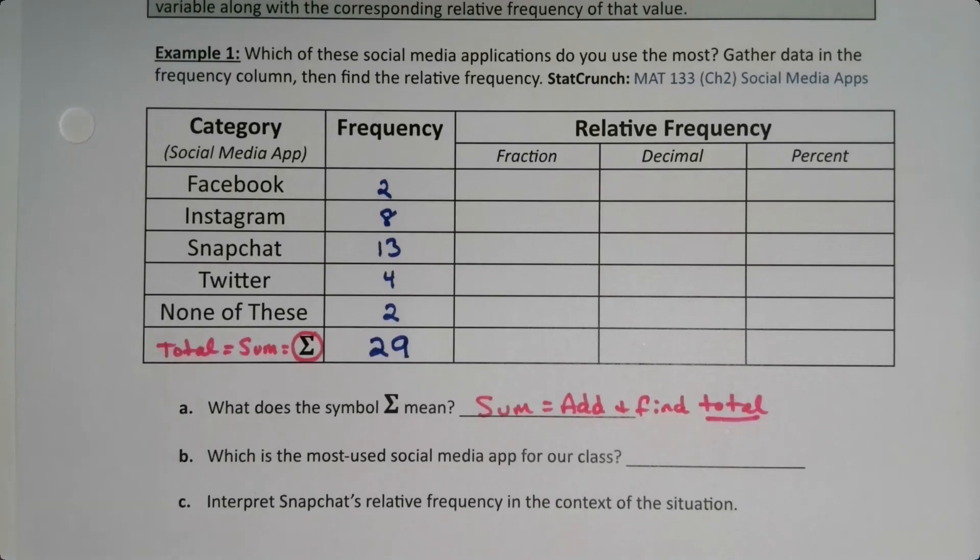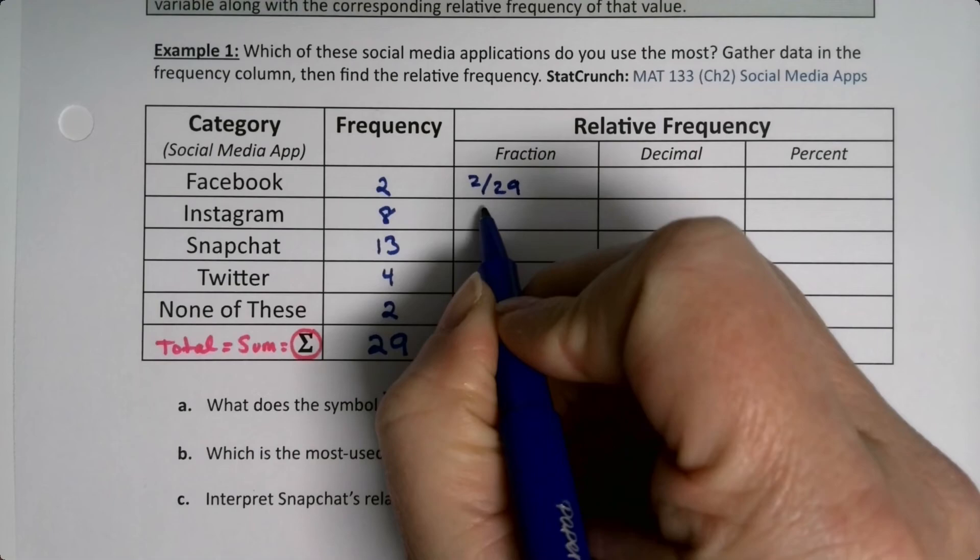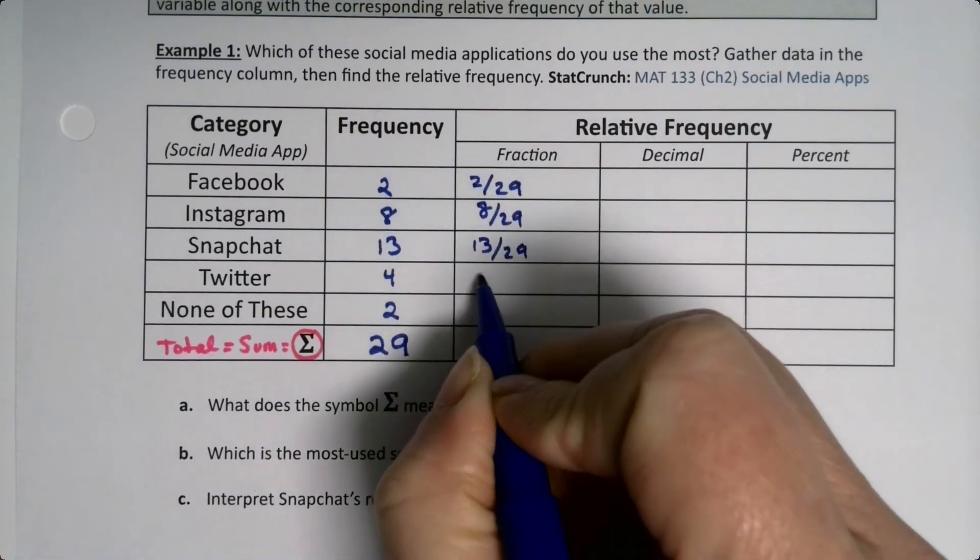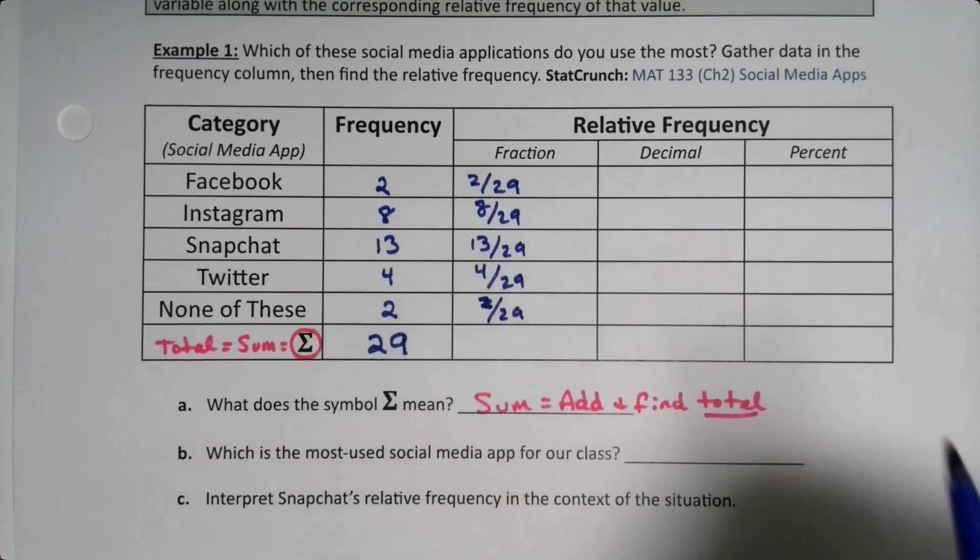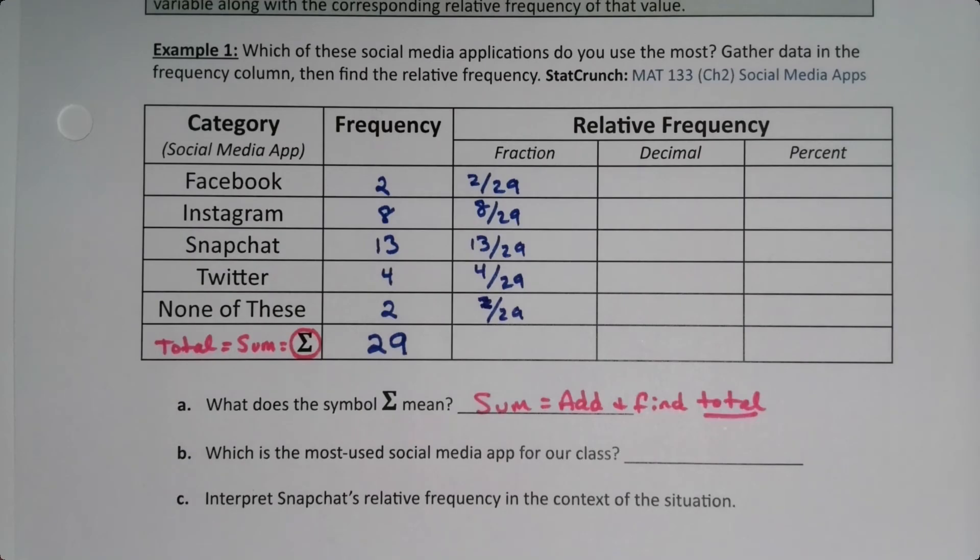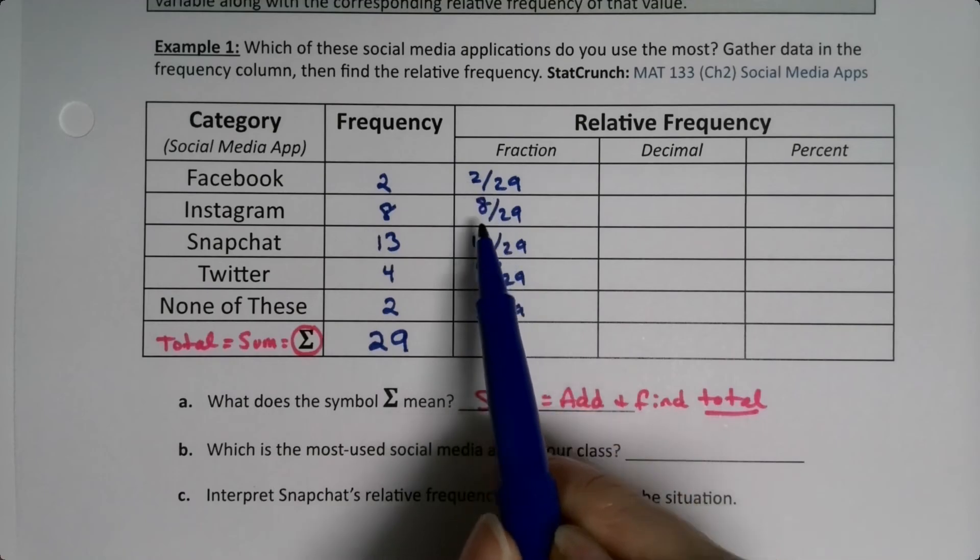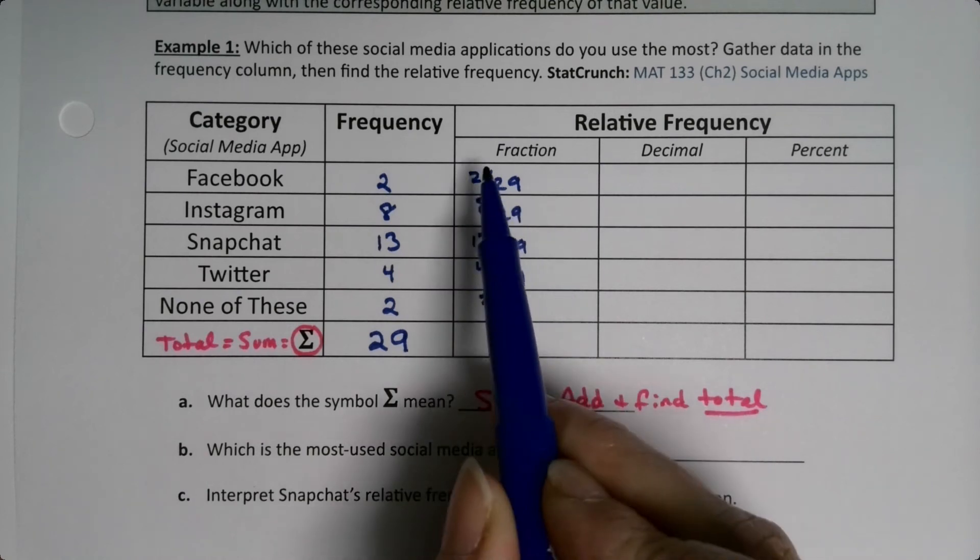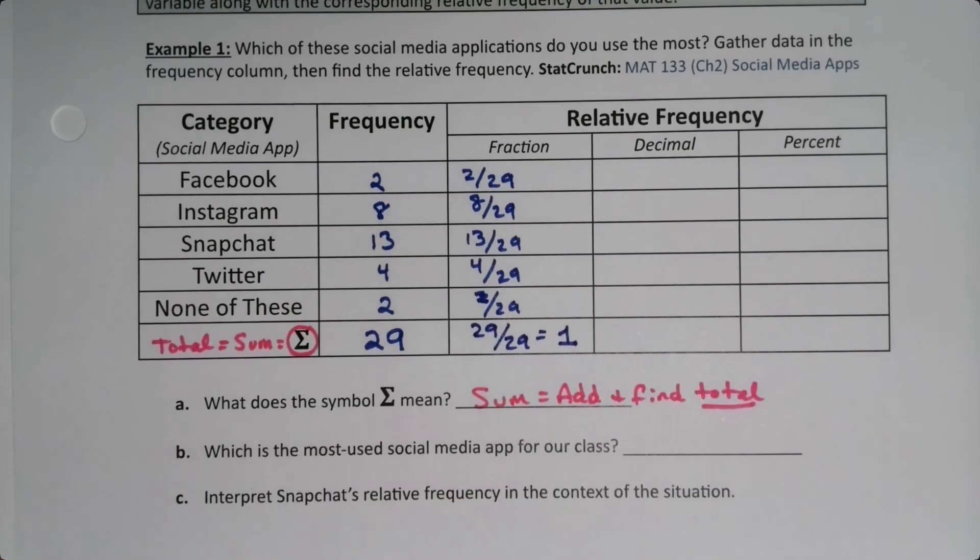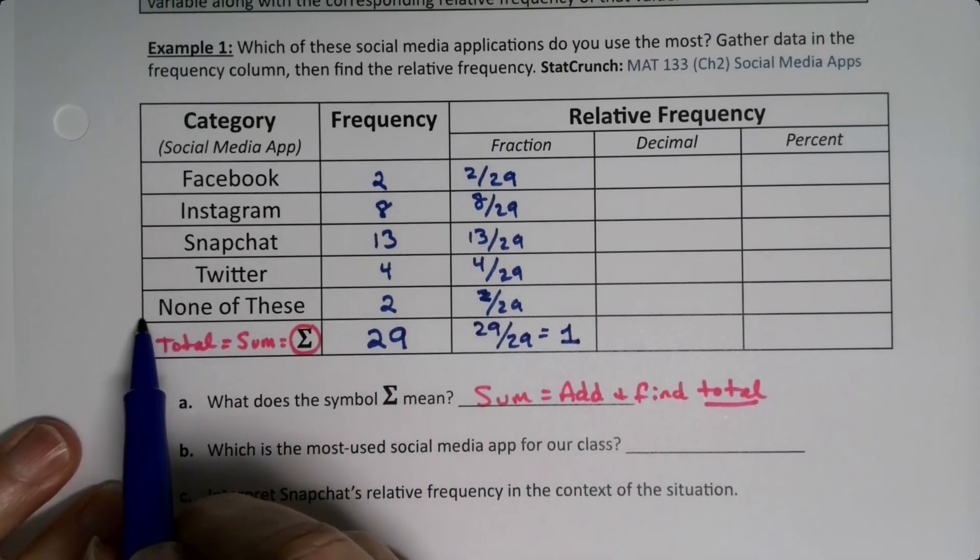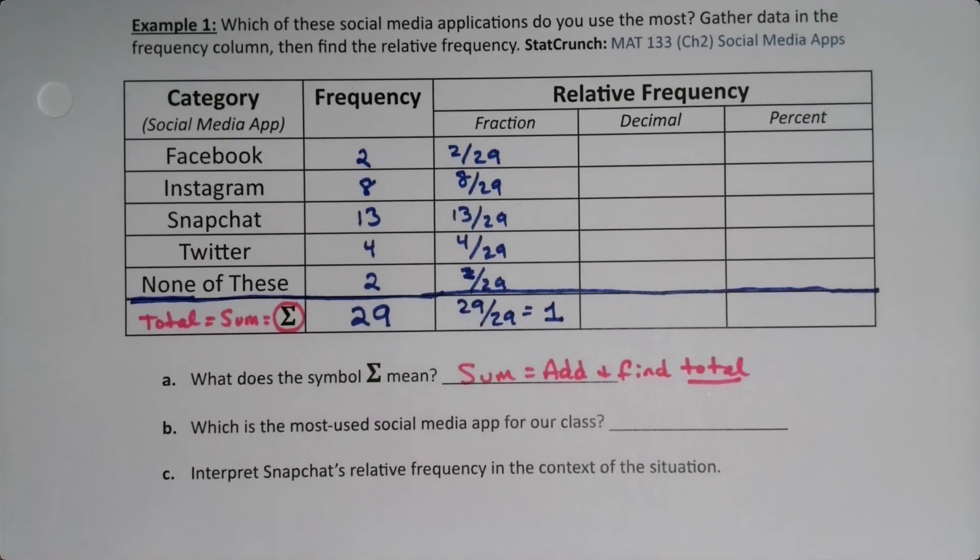Now I want to do the fraction. Well the fraction is really easy because what you're going to do is take the frequency and divide it by the total. So it's 2 divided by 29, 8 divided by 29, and so on. And you can see it's kind of not as useful. 2 over 29 is fine, but what does that mean? But I can tell that if I add all these up, fractions, the way fractions work is you add their numerators and leave the denominators alone. So it's 2 over 29 plus 8 over 29 which we know would make 29 over 29, also known as 1, by the time that we reach the bottom. So that's our total.